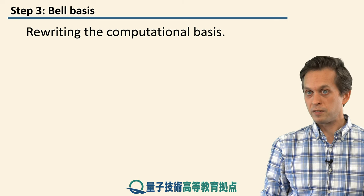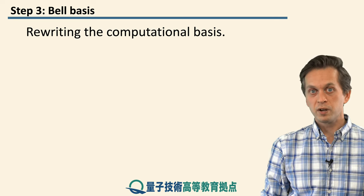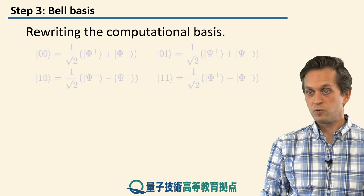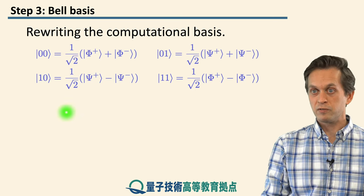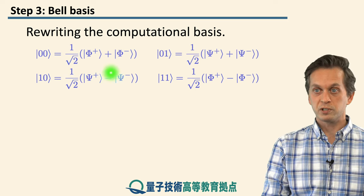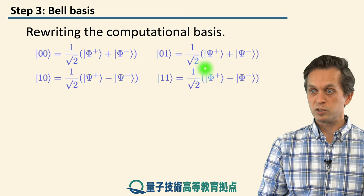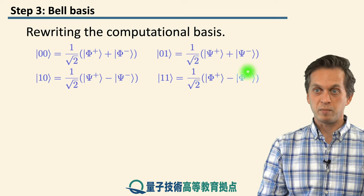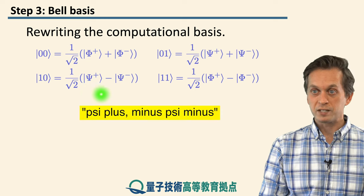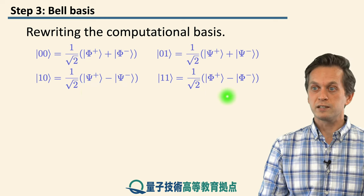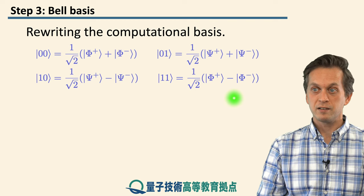An interesting thing about the Bell states is that they form an orthogonal basis of two qubits. We can begin by rewriting the computational basis in terms of the Bell basis. By simple rearrangement of terms, |0,0⟩ can be written as a superposition of phi-plus and phi-minus. Similarly, |0,1⟩ is an equal superposition of psi-plus and psi-minus, |1,0⟩ is an equal superposition of phi-plus minus phi-minus, and |1,1⟩ is given by phi-plus minus phi-minus.